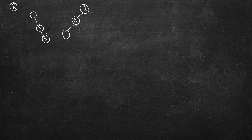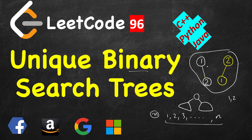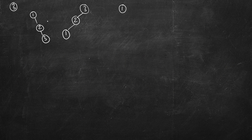Now let's take a bigger example with three numbers. One possibility is one, two, three going straight left — then the mirror shape with three at root and two and one in the left. Then with one as root, two and three both lie in the right subtree, and we already know that two numbers can be arranged in two ways: two-three or three-two.